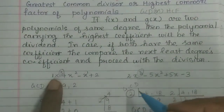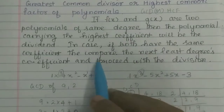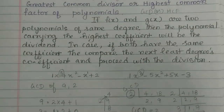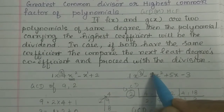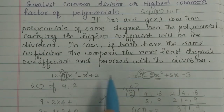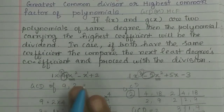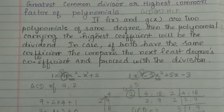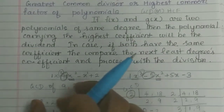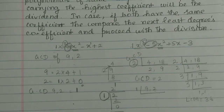Now, here is the highest power. Both polynomials have the same leading coefficient — for example, here it is 1. So how do you compare them? Compare the next least degree's coefficient. If you compare the highest degrees and they are equal, then compare the next degree — here x². We compare the coefficients: plus 1 or minus 5. So this is the introduction to the GCD series for polynomials.